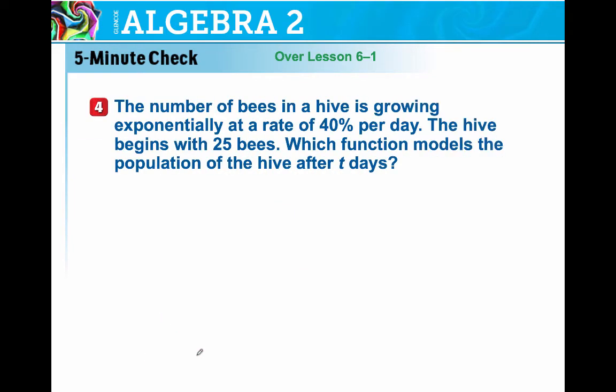Number of bees in a hive growing exponentially, a rate of 40% per day. The hive begins with 25 bees. Write a model that's going to model that. You're going to have number of bees after time t. So your amount after time t is equal to initial value is 25. We're growing by 40%. That's 1.4 raised to the t. There's your equation.